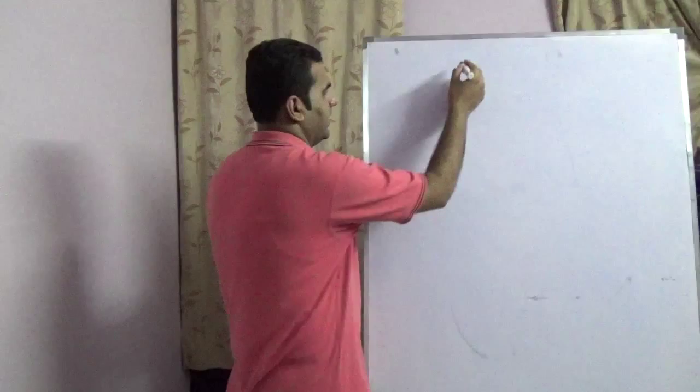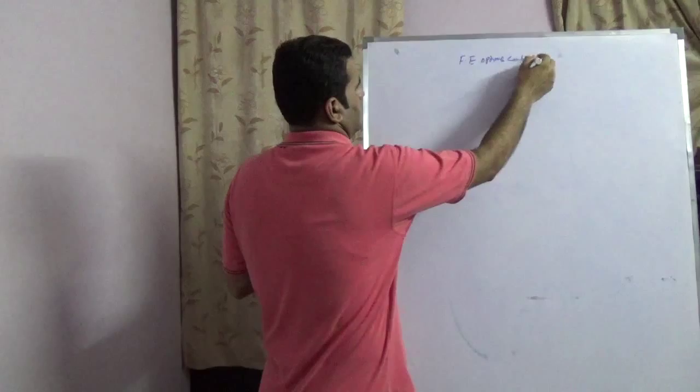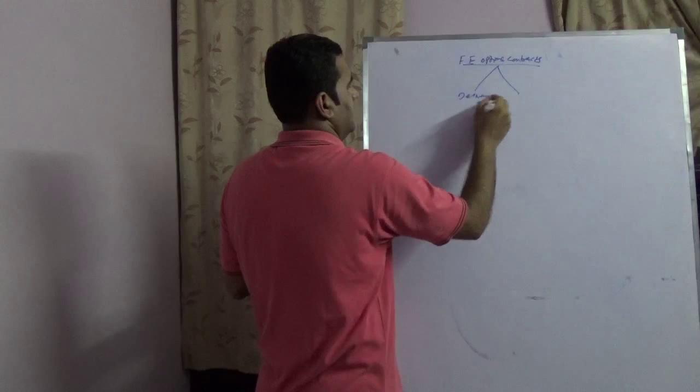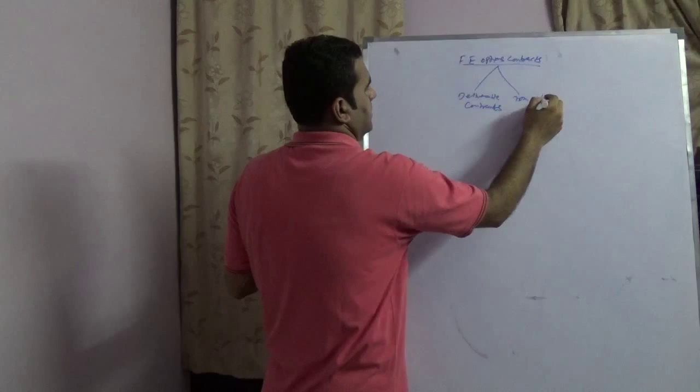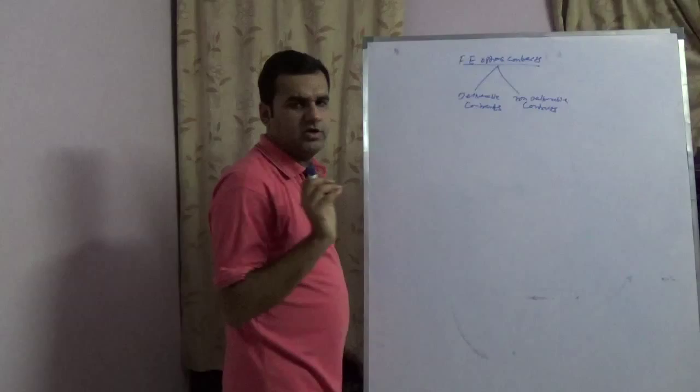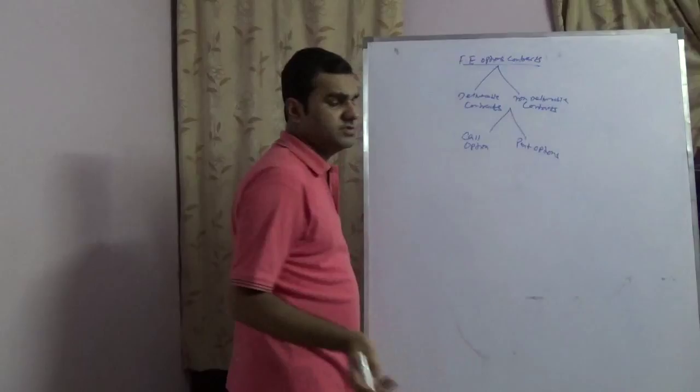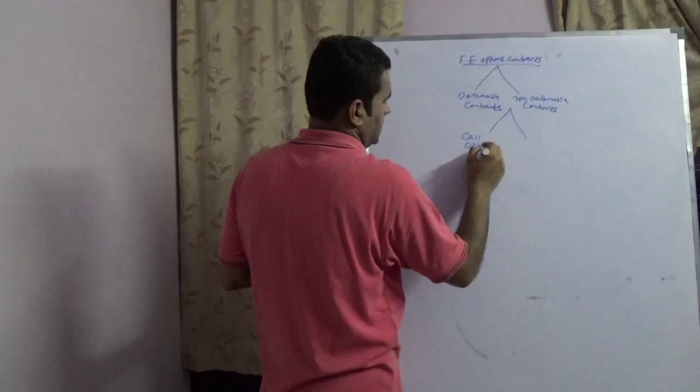The first part refers to deliverable and the other refers to non-deliverable. Both deliverable and non-deliverable are further divided into two parts: call option and put option. Call options and put options are further categorized into two parts.